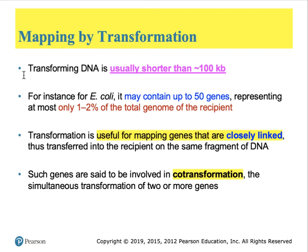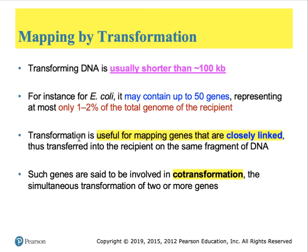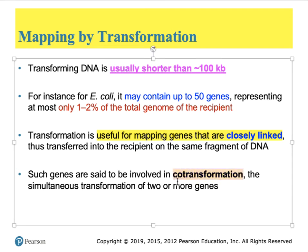The docking proteins that take in DNA from the environment have a capacity to bring in DNA no bigger than 100,000 base pairs. In the case of E. coli, these fragments may contain up to 50 genes, representing only 1 or 2% of the total genome. So transformation itself is not important in changing the entire chromosome of a recipient cell, only small fragments. Transformation is more useful for genetics because it allows mapping of genes that are closely linked — such genes that reside close together are said to be co-transformed through a process called co-transformation.